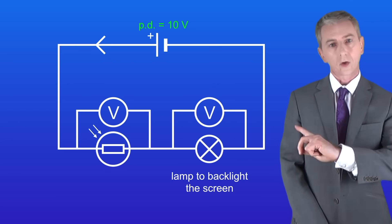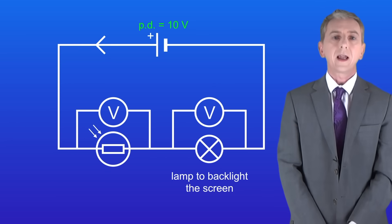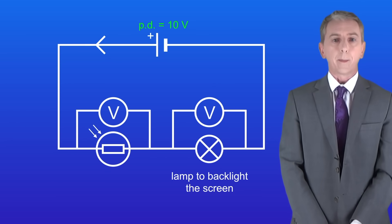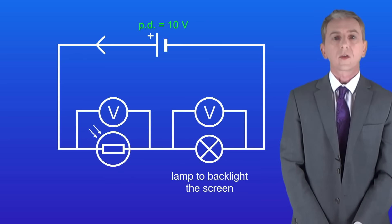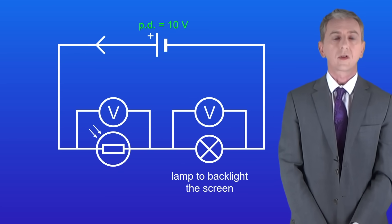So take a look at this circuit. We've got an LDR in series with a lamp. The lamp is the backlight for the mobile phone screen. We've got a cell in the circuit with a potential difference of 10 volts.